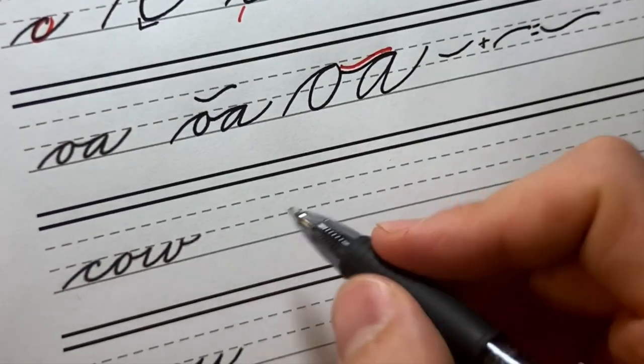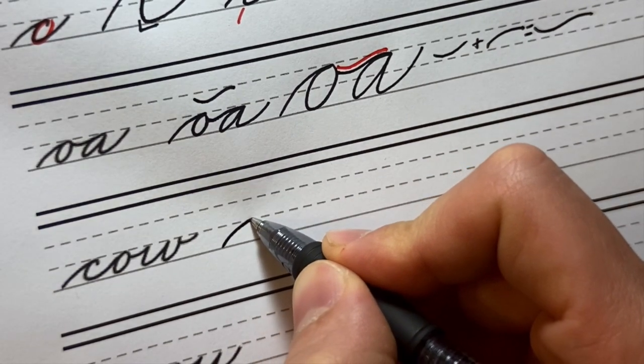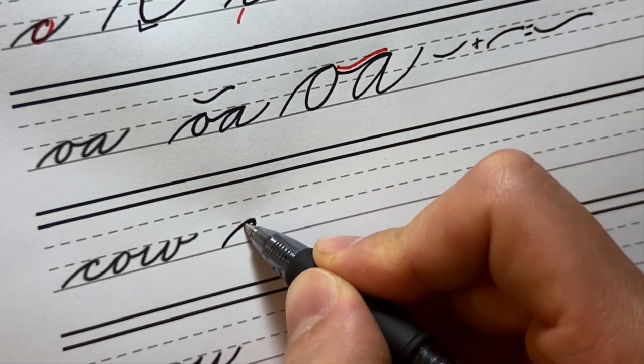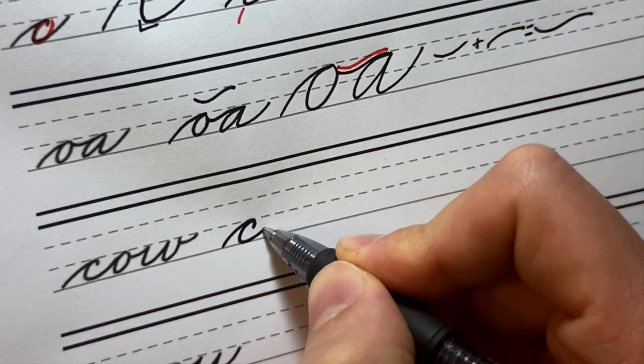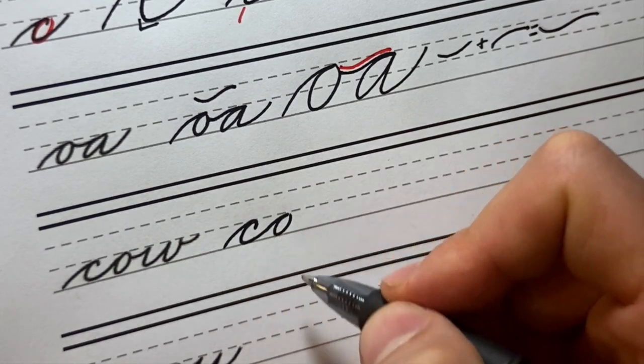Let's look at another, an actual word here, cow. We'll enter our C with an overturn, do a hook, come down. Another little subtle compound curve between that C and the O.